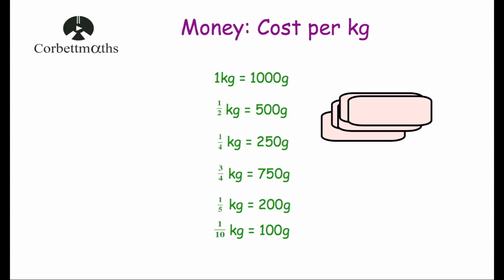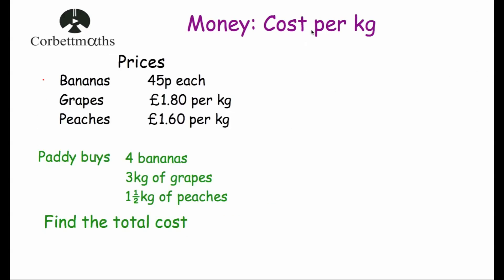Now let's look at four typical exam questions. The first is a non-calculator question, and the next three are calculator questions. We have some prices: bananas cost 45p each, grapes cost £1.80 per kilogram, and peaches cost £1.60 per kilogram. Paddy buys four bananas, three kilograms of grapes, and one and a half kilograms of peaches. We've been asked to find the total cost.